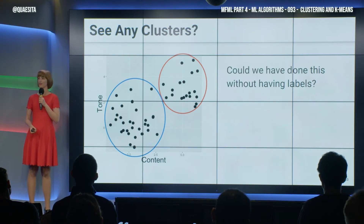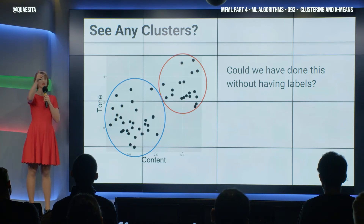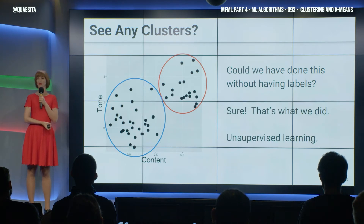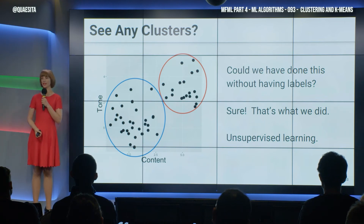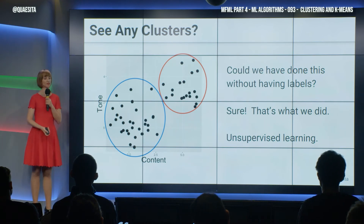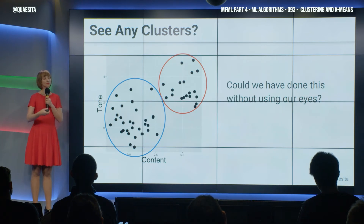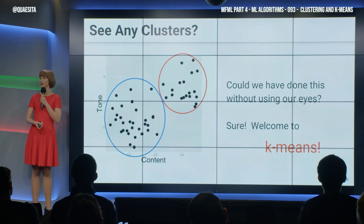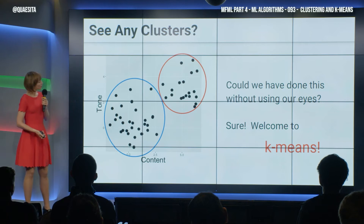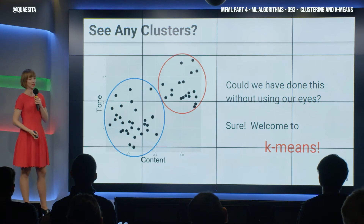Could we have done this without having labels? That is a trick question to see if you are paying attention — there are no labels here. So, of course, this is unsupervised learning. All we have, all we know about is the ingredients, and we are finding those clusters ourselves. Could we have done this without using our eyes? Sure, otherwise what are we doing in this section? So welcome to k-means.